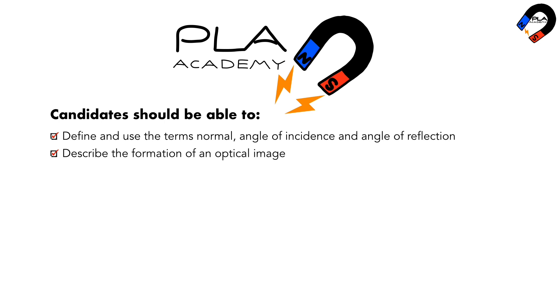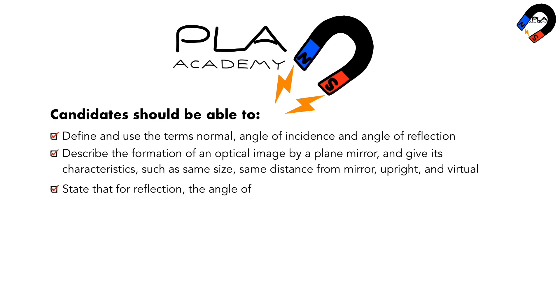Describe the formation of an optical image by a plane mirror and give its characteristics such as same size, same distance from mirror, upright and virtual. State that for reflection,